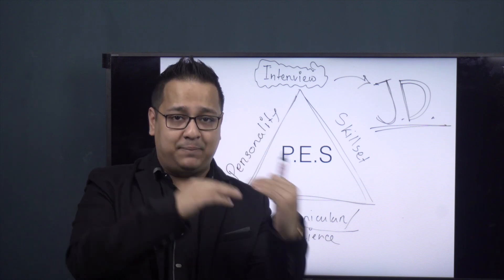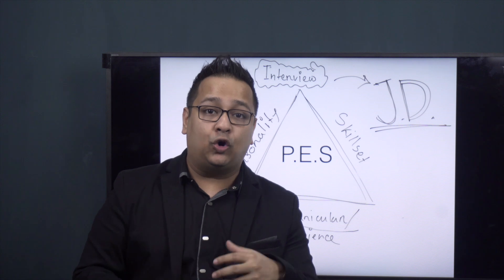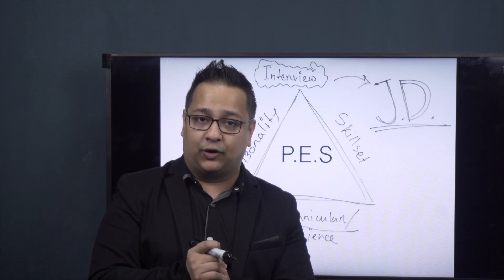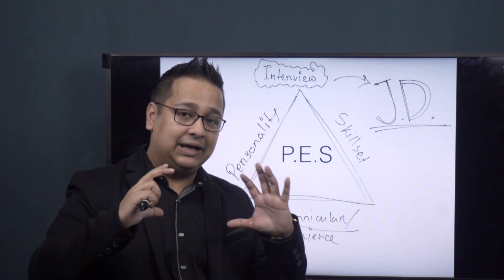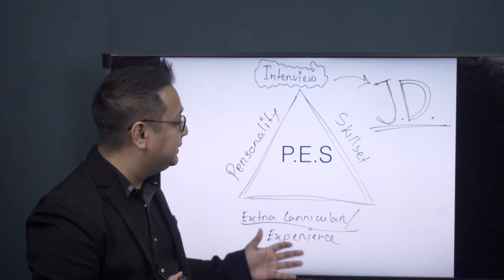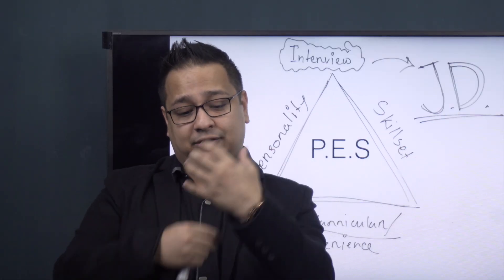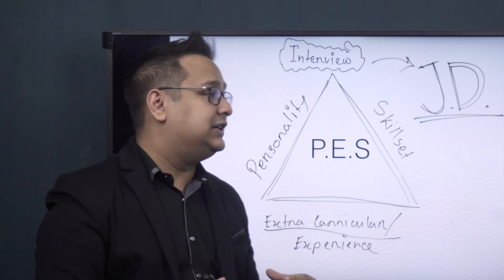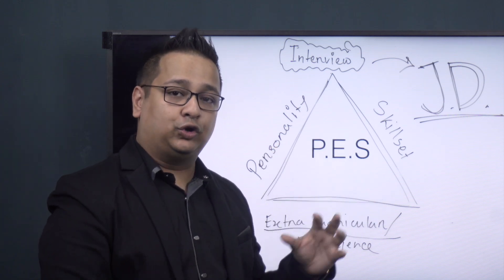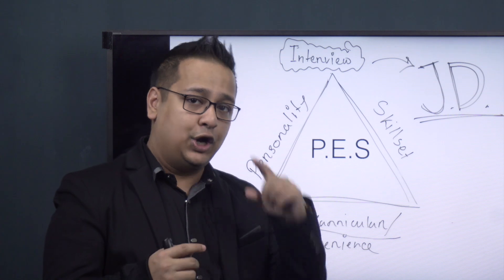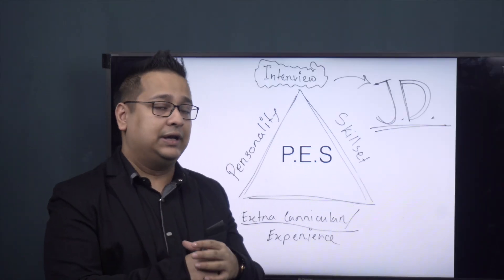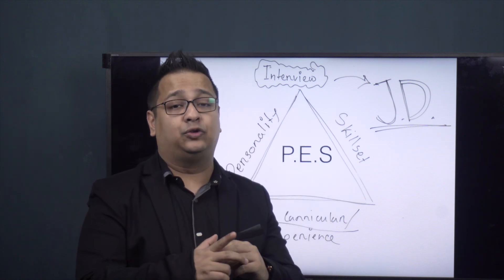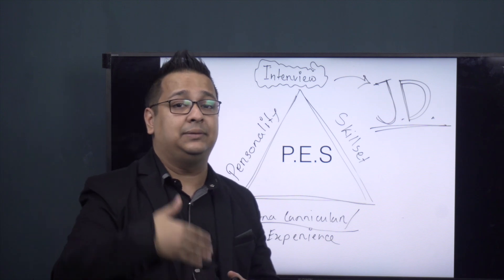If you add the JD to the PES, that will give you a more clear idea of what type of candidate they are looking for. The next step is to match your PES - your personality, experience, and skill sets - to the JD. See if your personality matches the JD personality, if your experience or extracurricular activity adds value to that JD, and if your existing skill sets match the required skill sets. Then your chances of getting hired are higher.